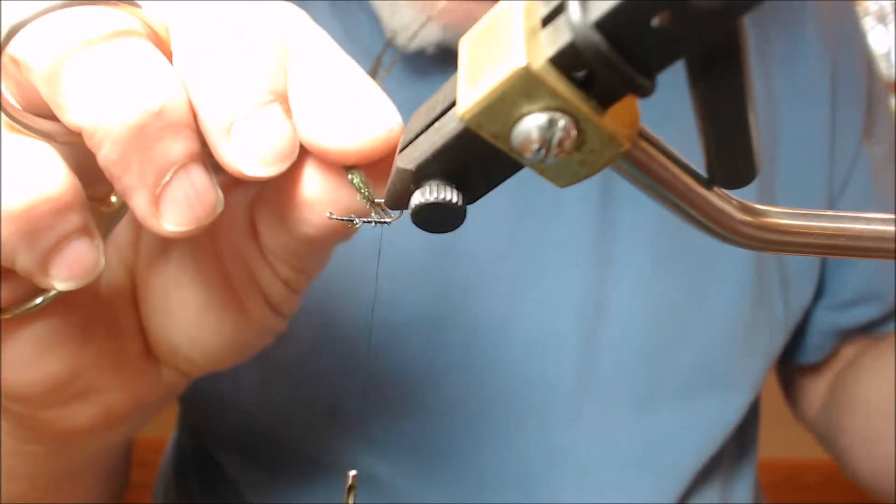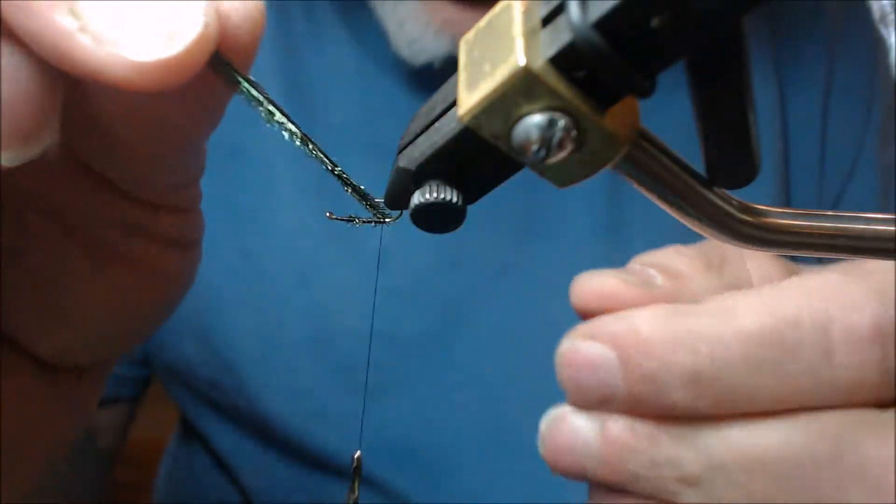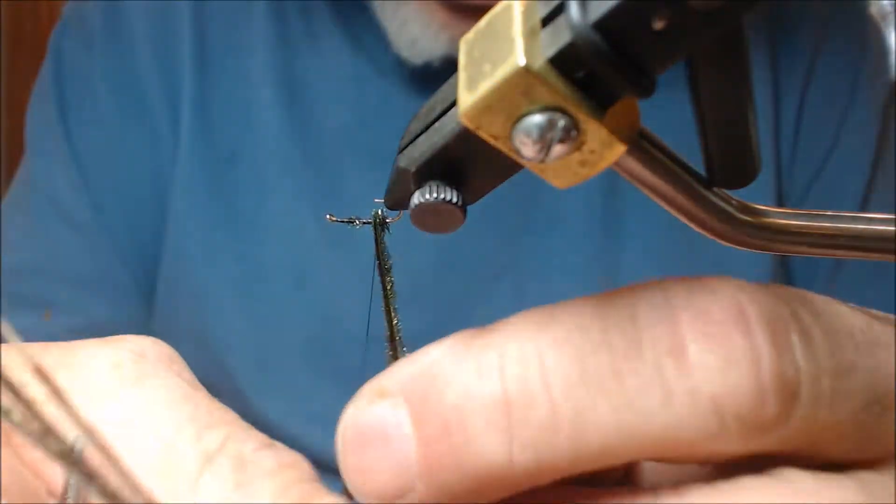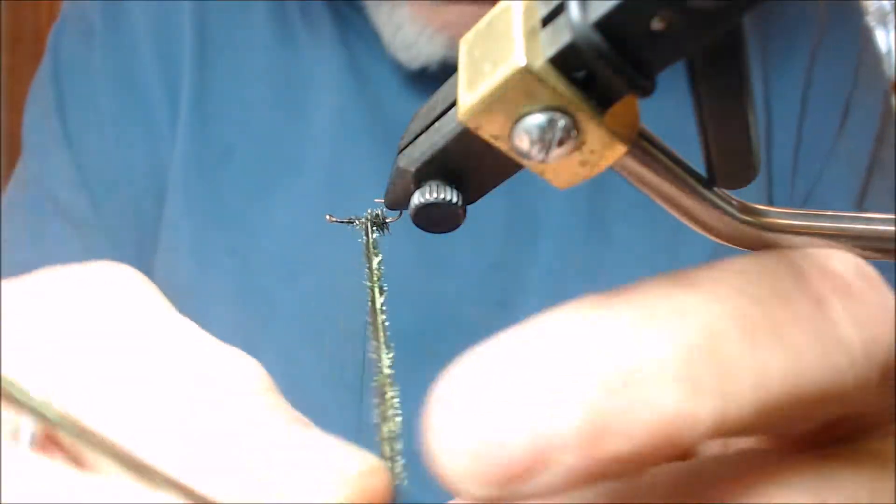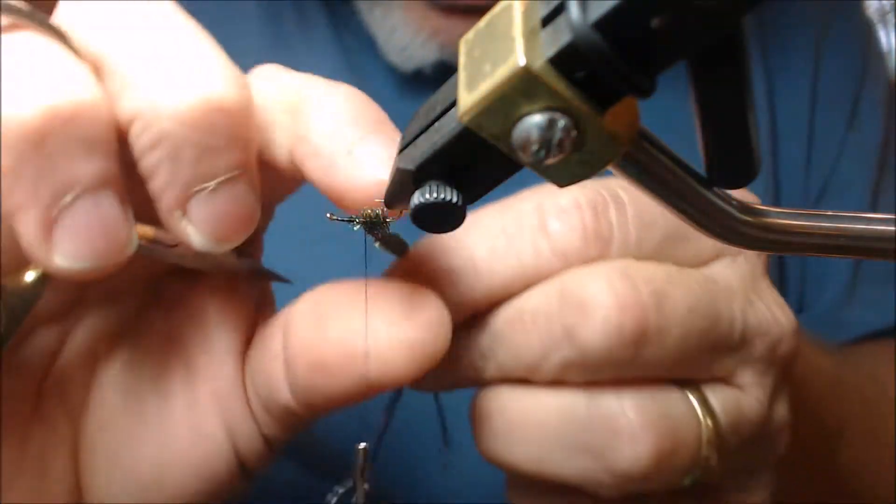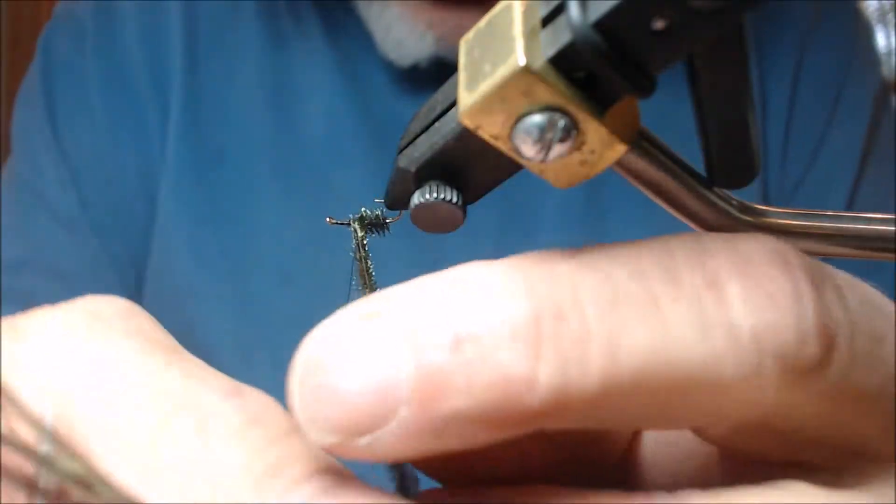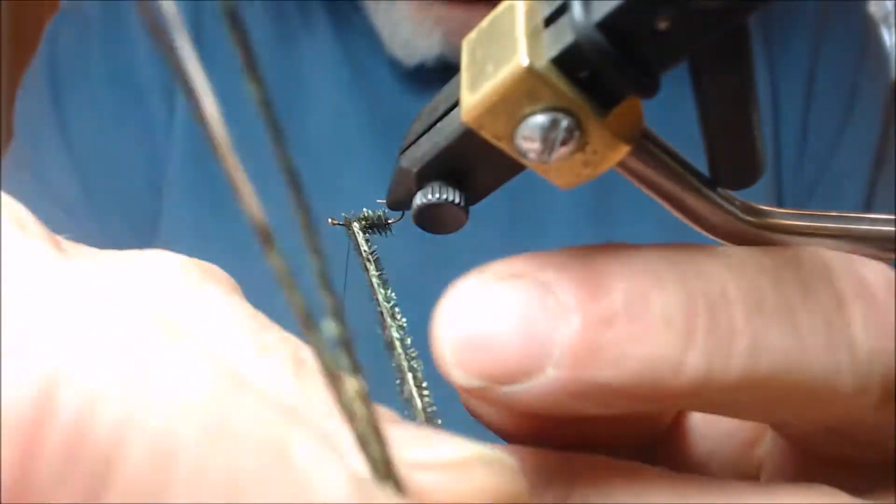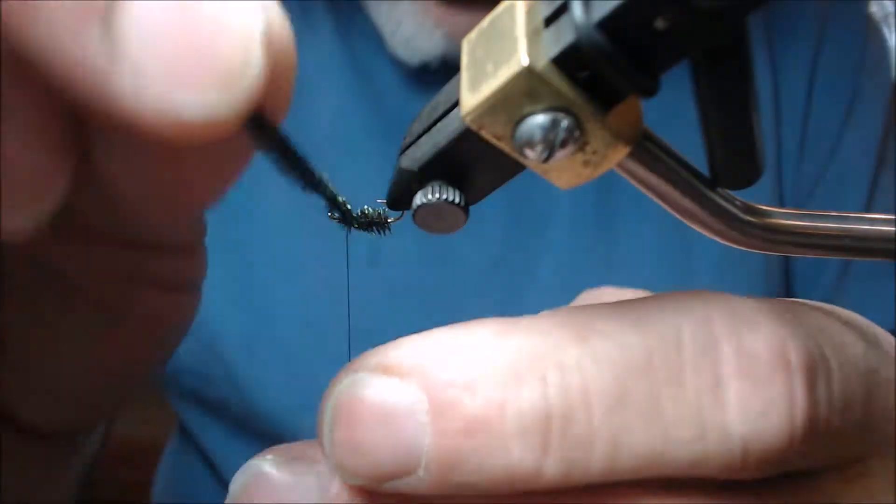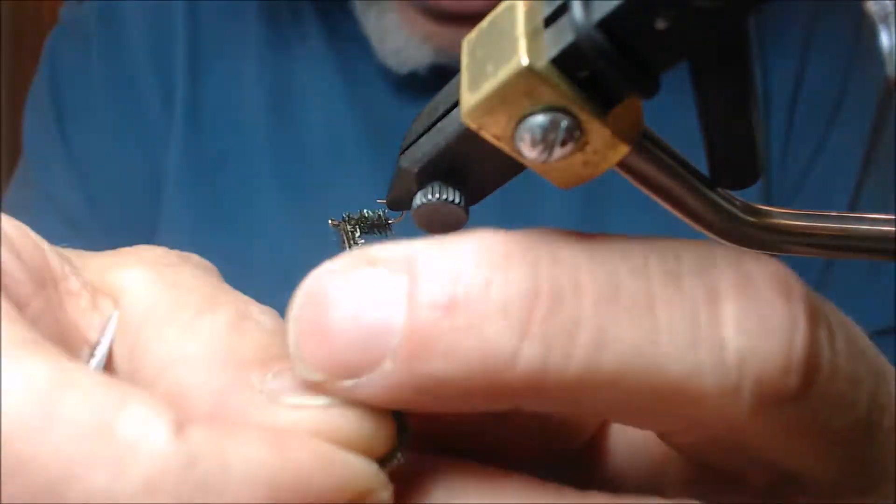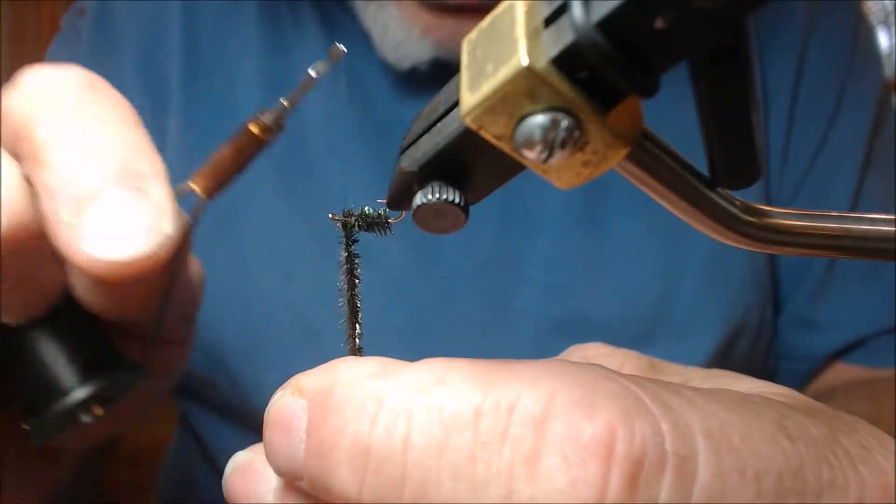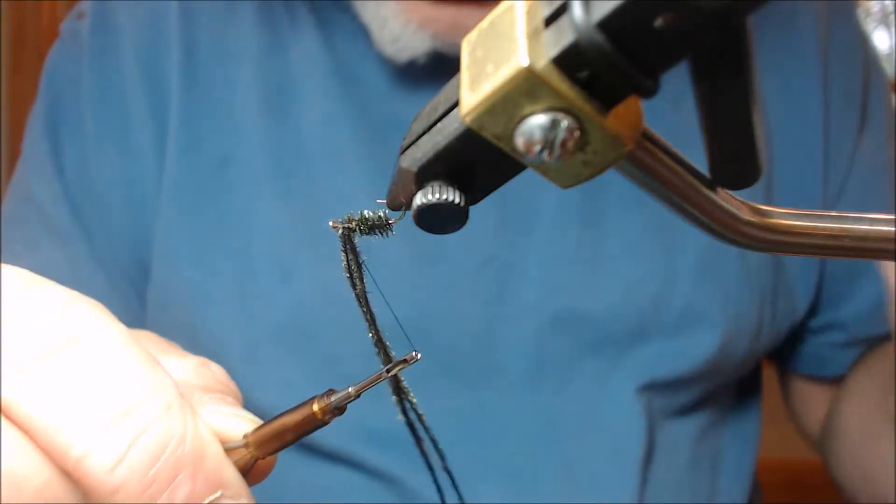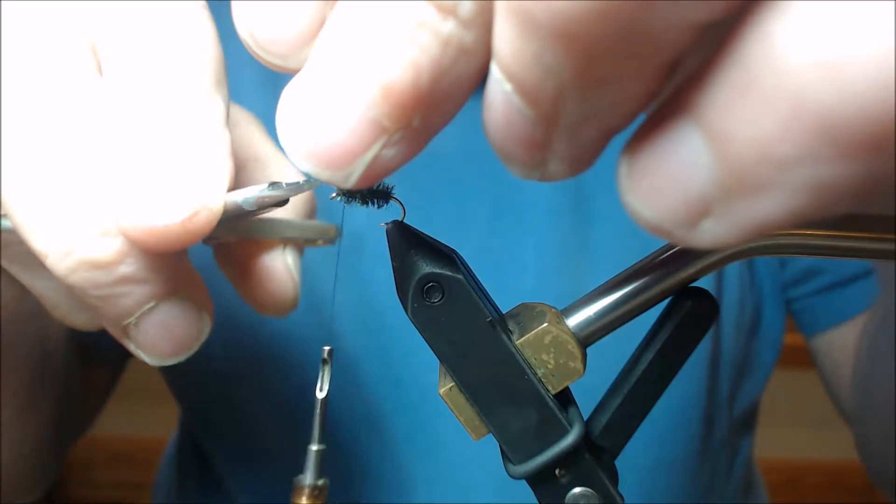Notice it's on top of the hook shank. I'm going to leave the thread there, turn my vise somewhat upside down, and start wrapping forward the peacock all the way up, creating a nice body. Somewhat tapered from the back to the front. And I'm not going to stop where I normally would for a body, because what I want to do is keep this including my thorax. I'm going to wrap all the way up. Then I'm going to tie off right there, about an eye back.